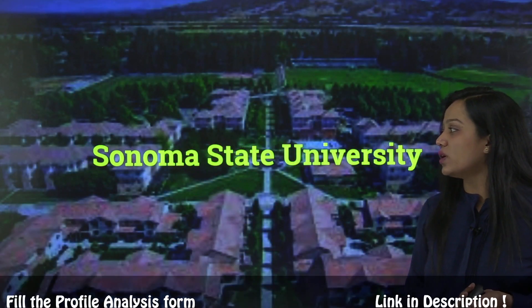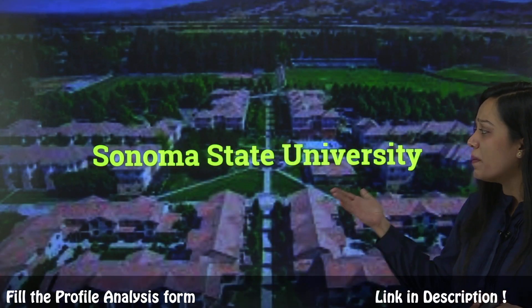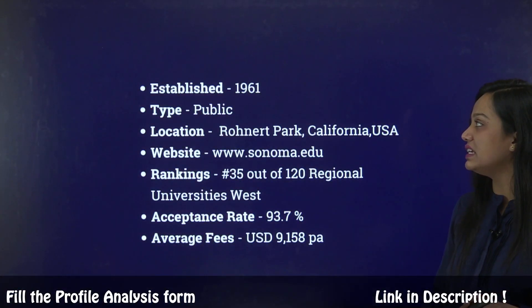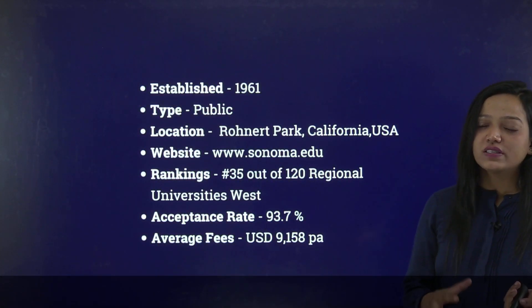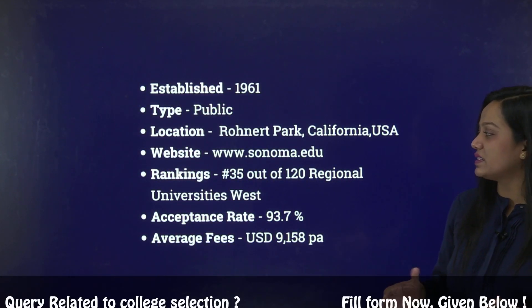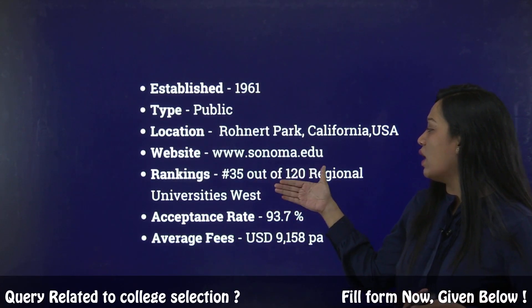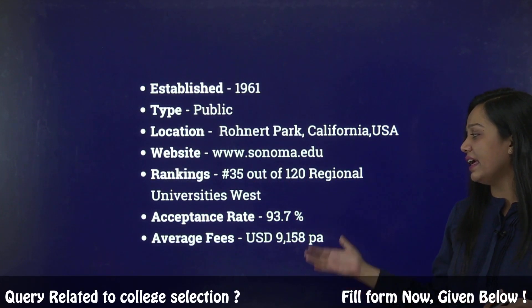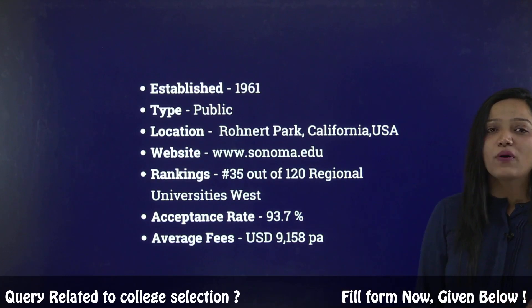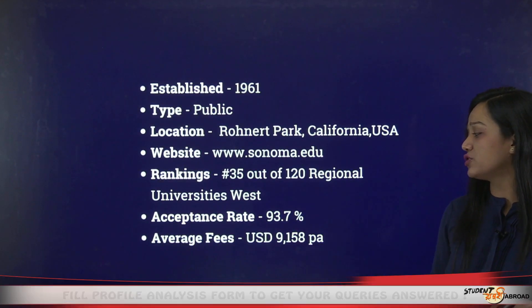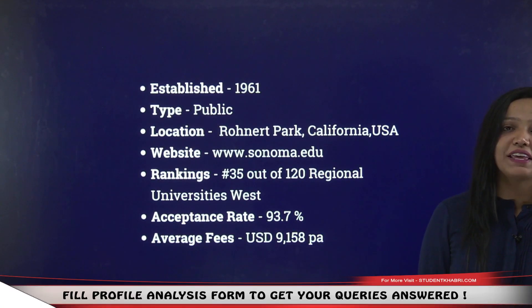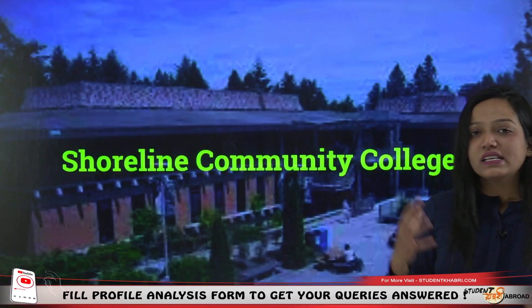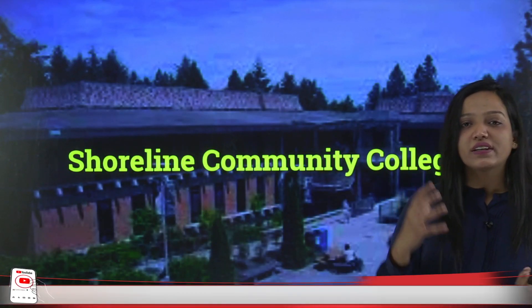Moving to the next college — Sonoma State University, established in 1961. It's a public university, ranked 35th out of 120 regional universities in the West. It has a 93.7% acceptance rate and average fees of $9,158 US dollars. All these colleges vary based on your profile, budget, and preferred location.